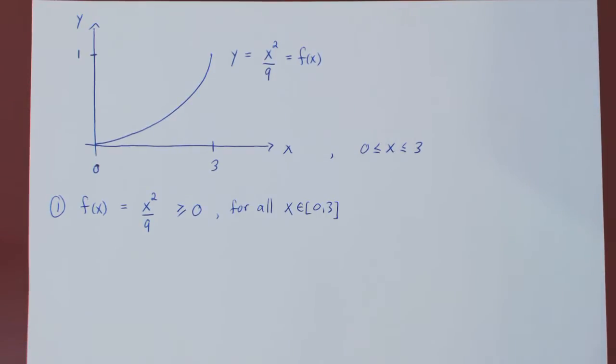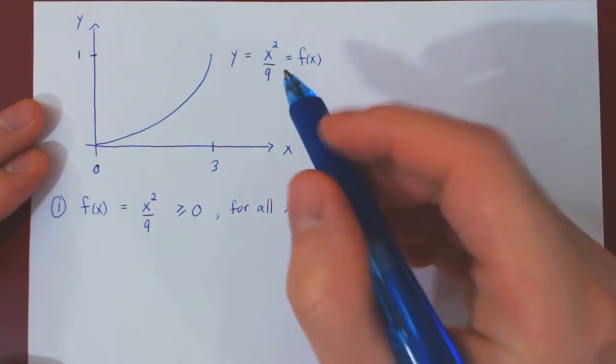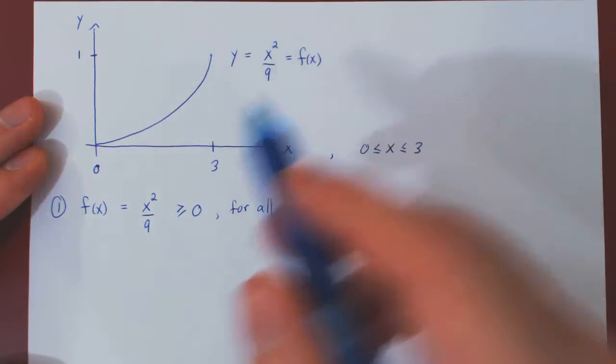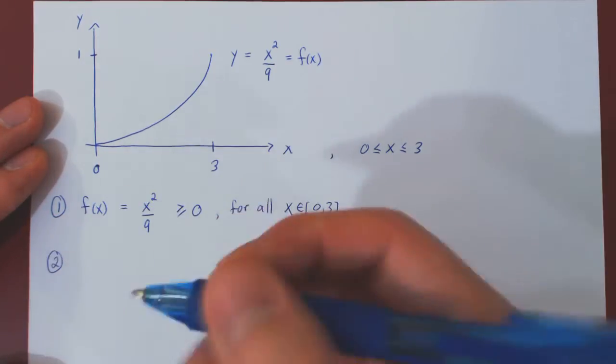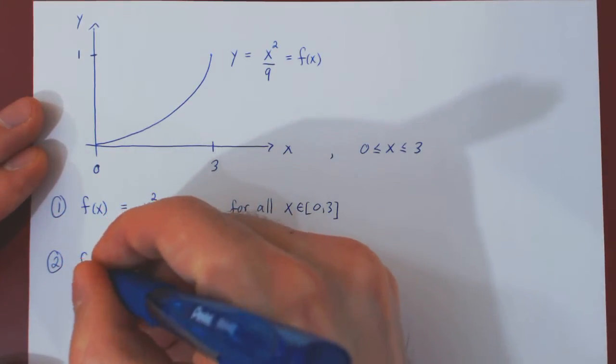The second property, if you recall, was that the entire area below the density function over the interval must be exactly equal to 1. Well, the area is given by the definite integral.